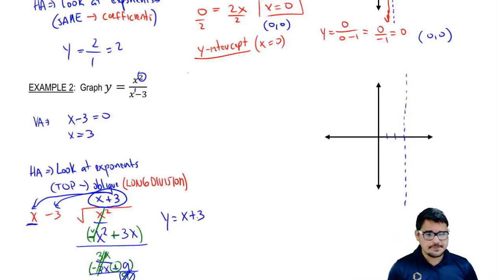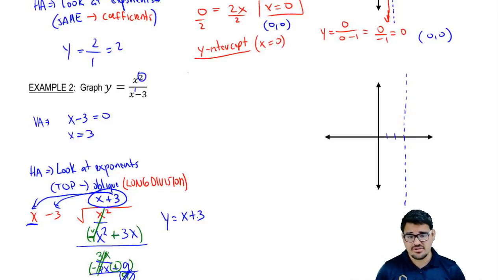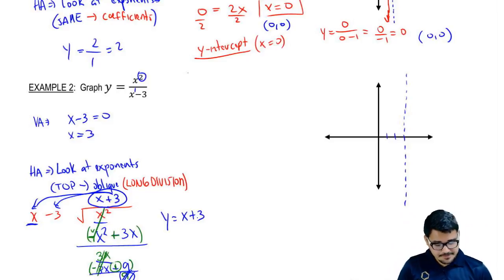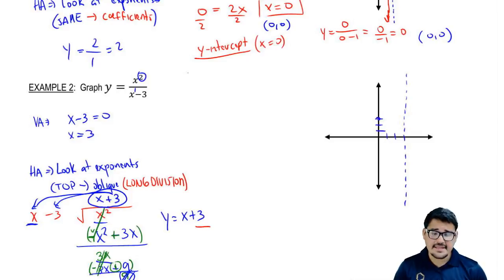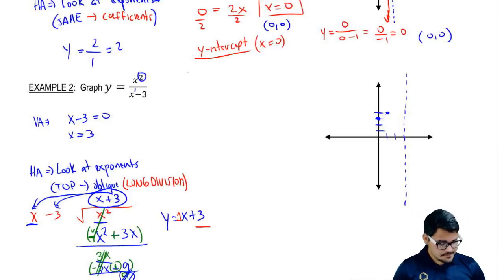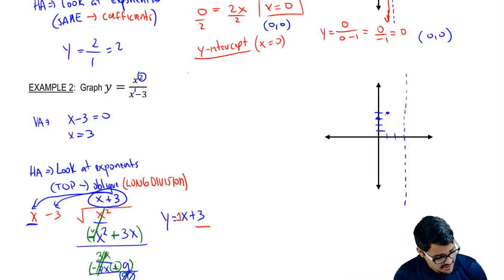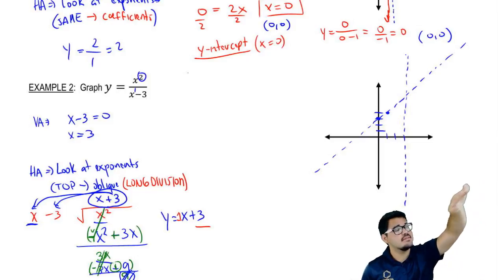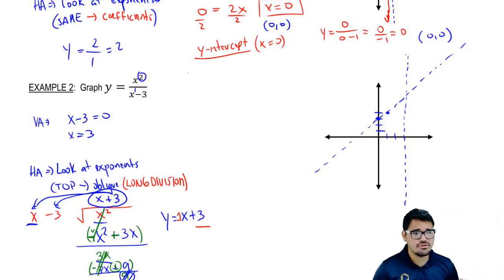Now that we have the oblique asymptote y equal to x plus 3, we can graph it before finding the intercepts. This is a linear function — a line with a y-intercept of 3 and a slope of 1. So we go to 3 on the y-axis, then rise 1 and run 1. We draw a dashed line through this. Now we have a slant asymptote — you can see it's not horizontal but oblique. So now we have both asymptotes plotted together.